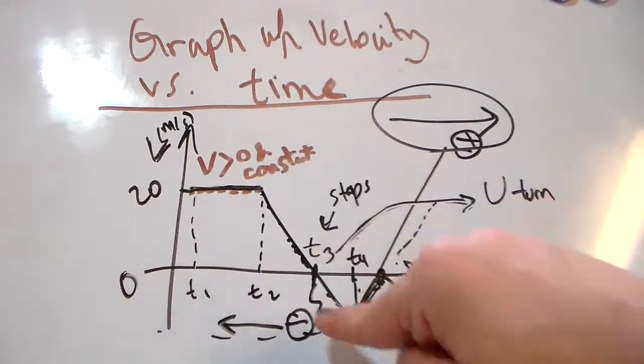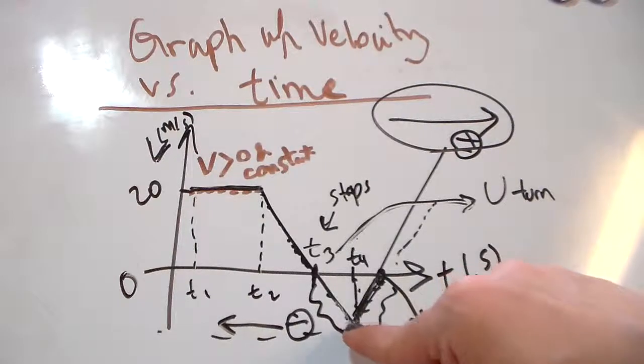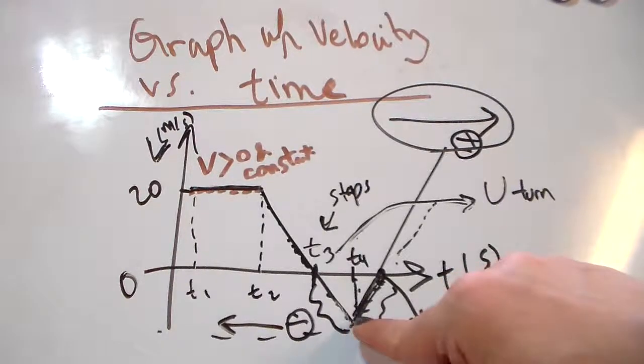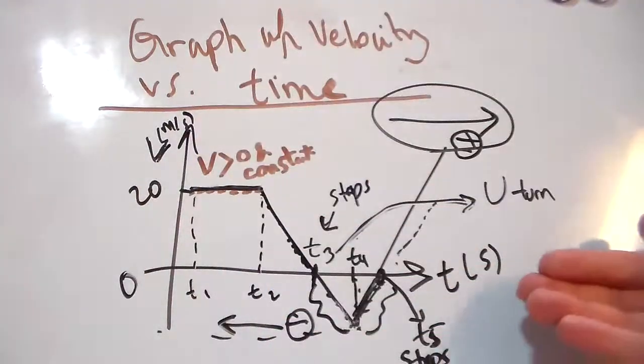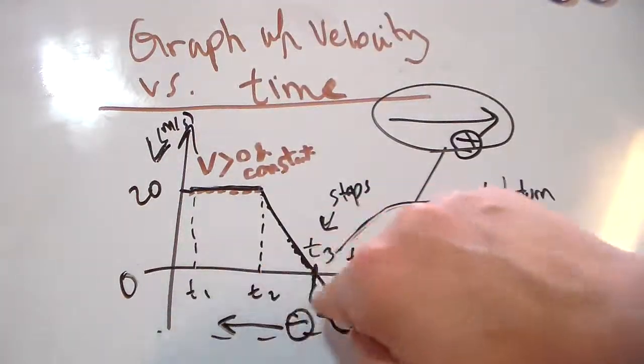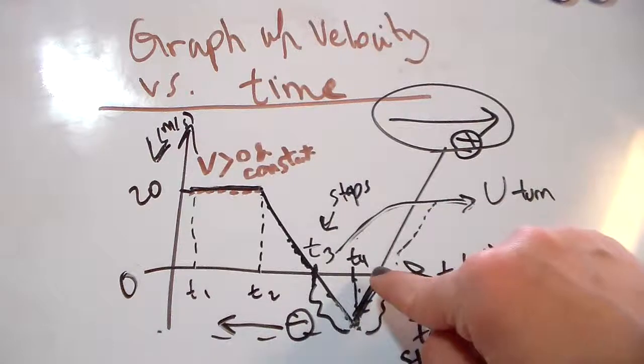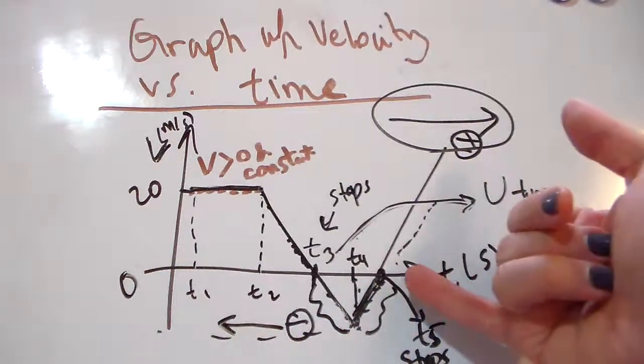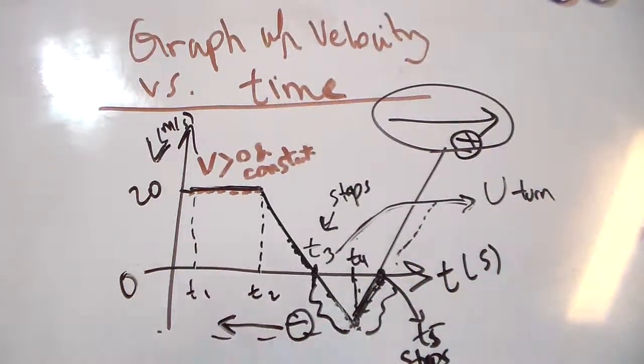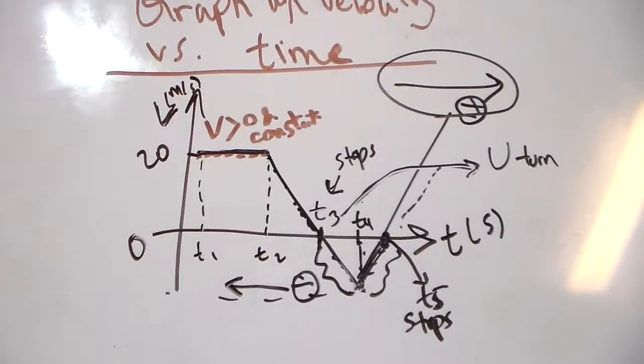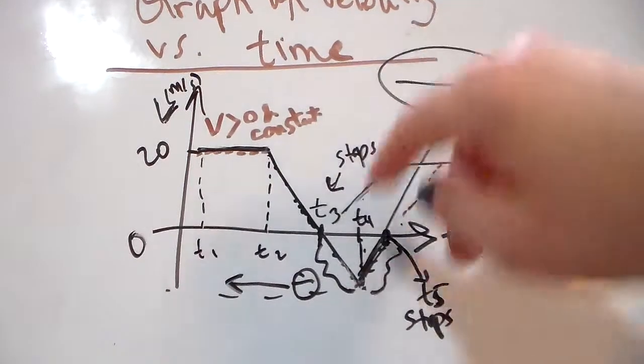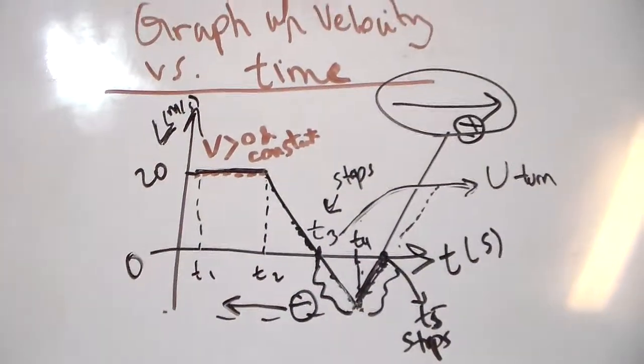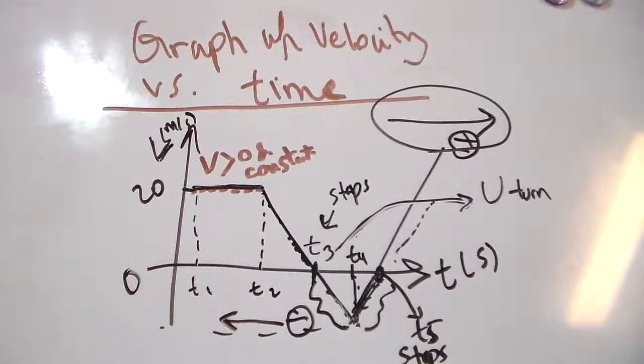As we get to the highest velocity, we're going to slow down. The velocity's magnitude goes towards zero, so we slow down until we stop momentarily, then we make a U-turn and go towards I-10 east.